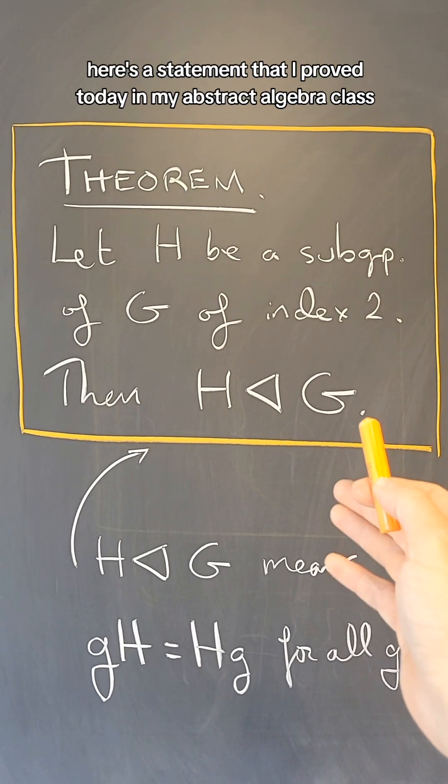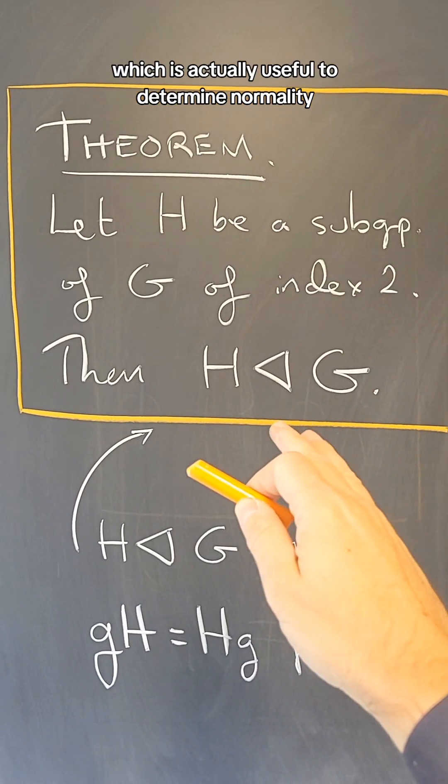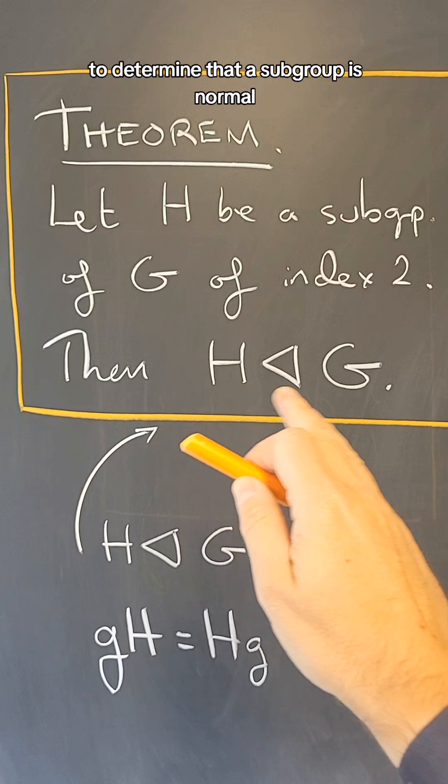Here's a statement that I proved today in my abstract algebra class, which is actually useful to determine normality, to determine that a subgroup is normal.